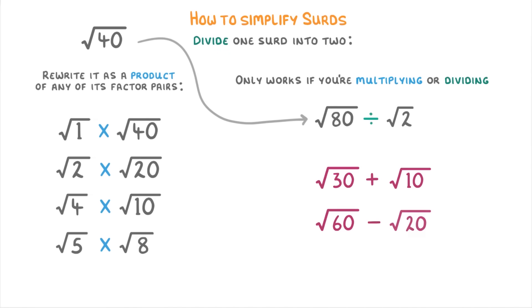you can't write it as root 30 plus root 10, or root 60 minus root 20. Because even though 30 plus 10 and 60 minus 20 are both 40, we can only use this rule when we're multiplying or dividing, not when we're adding or subtracting.